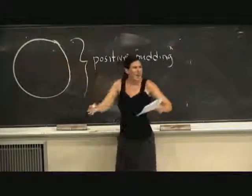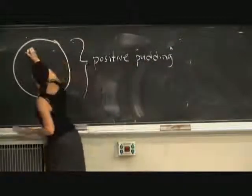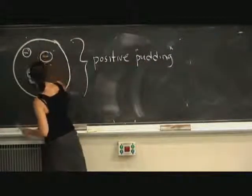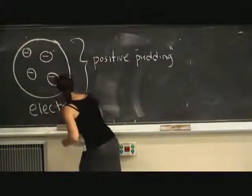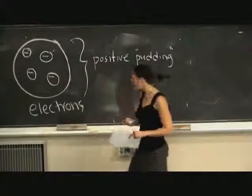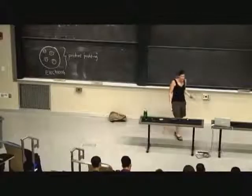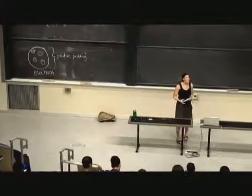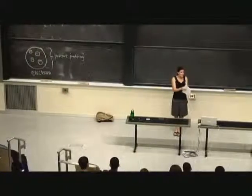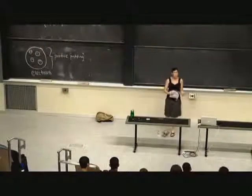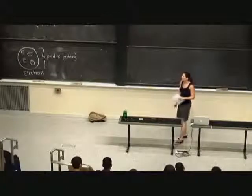The majority of the atom was just kind of this goopy positive stuff. And within the pudding, he had all these negative charges, which were the electrons — they were the raisins or the plums in the pudding. This was a revolutionary model of an atom, given that before this experiment, the understanding was that an atom could not be divided into smaller parts. And now here we are with subatomic particles, with electrons and this wonderful plum pudding model.